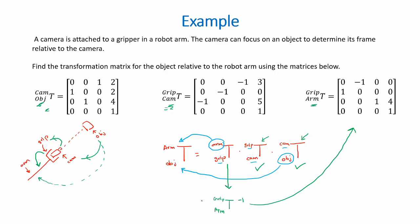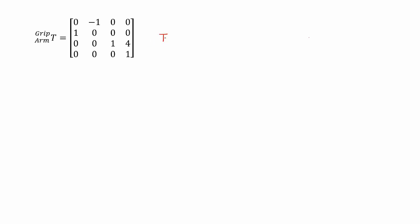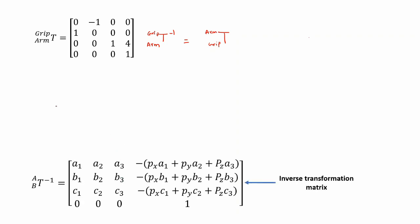The first step is to find the inverse transformation matrix of the arm relative to the gripper, which gives us the gripper relative to the arm. The second step will be to multiply all three matrices together. Using the shortcut formula, we transpose the first column into the first row to get 0, 1, 0; the second column into the second row: -1, 0, 0; and the third column into the third row. The final column is then computed using the formula.